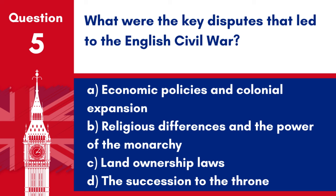Question 5: What were the key disputes that led to the English Civil War? a. Economic policies and colonial expansion. b. Religious differences and the power of the monarchy. c. Land ownership laws. d. The succession to the throne. Answer: b. The English Civil War was primarily fuelled by conflicts between the monarchy under Charles I and Parliament, with significant issues being religious differences and how much power the king should have.